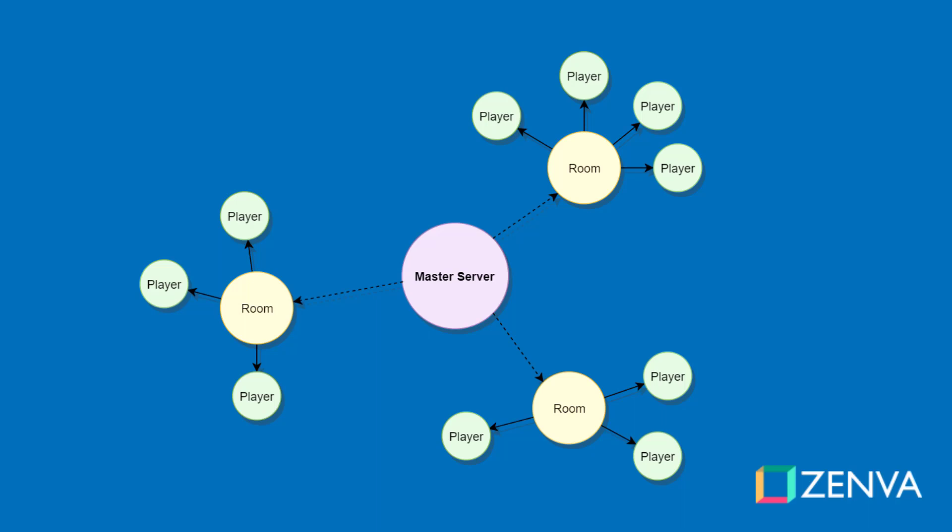This is what the framework looks like — you have the master server, and all the different rooms that players can create connect to that. In those rooms, you have your players, and these are very secluded areas away from each other. If one player in one room shoots their gun, a player in another room won't see that on their screen. Messages you send within a room only go to the players in that room.